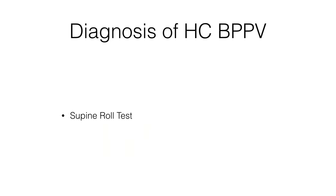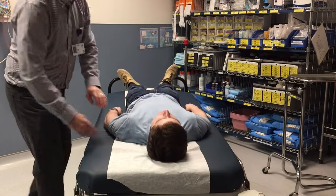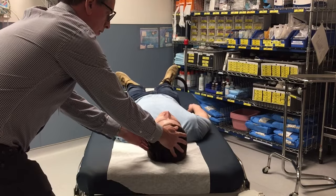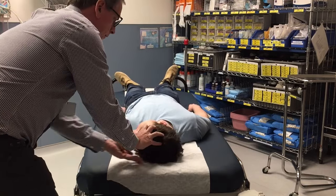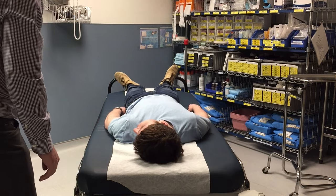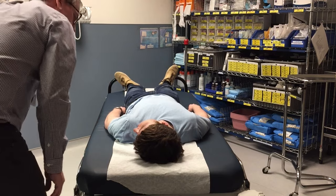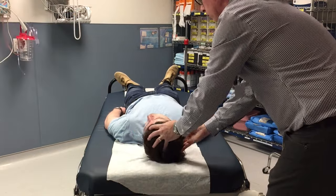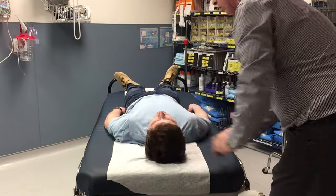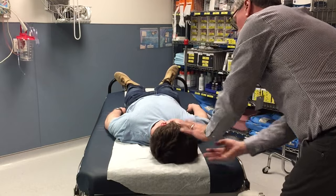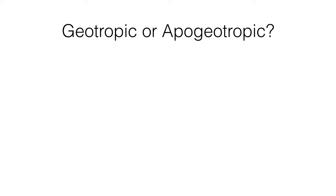This part is fairly easy to perform. You simply have the patient lie supine, then turn their head 90 degrees to the left, and then to the right, and observe for nystagmus. If the test is positive, you will observe purely horizontal nystagmus, either beating towards the ground — which is called geotropic nystagmus — or away from the ground, which is called apogeotropic nystagmus.